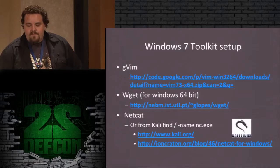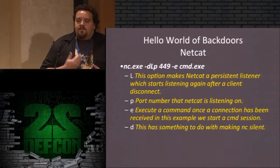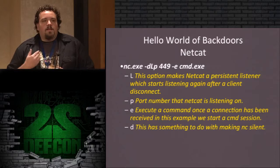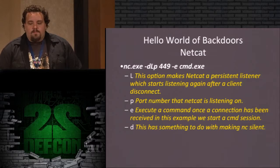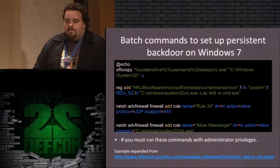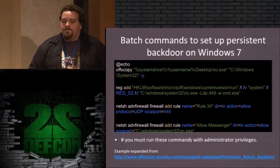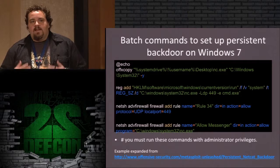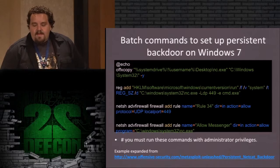We get netcat from Kali and set up a backdoor. In this command we're running netcat with a listener on port 449 and telling it to execute CMD. So as soon as I connect to that port through netcat as a client I get a command prompt. Before connecting, I have to put netcat somewhere in the path, do registry settings, and disable the firewall or add a rule to allow access to that netcat instance. I'm also assuming the user is logged in with admin privileges — you need that to modify the firewall. This example is expanded from Offensive Security's tutorial on setting up a persistent netcat backdoor.